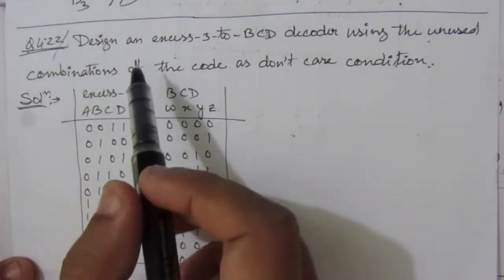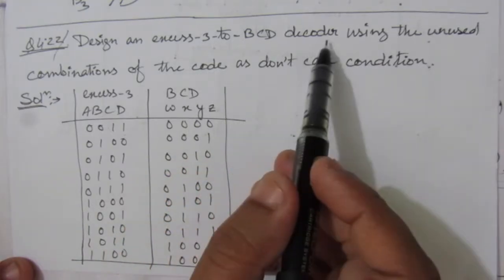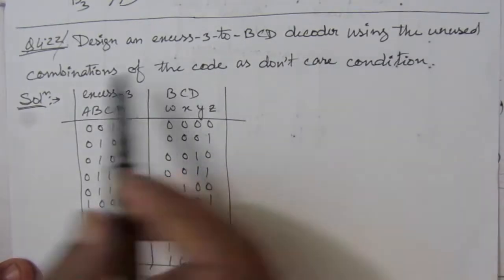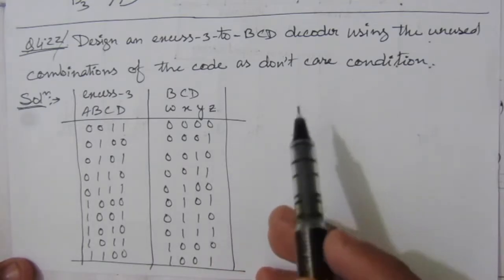The problem is: design an XS3 to BCD decoder using the unused combinations of the code as don't care conditions.